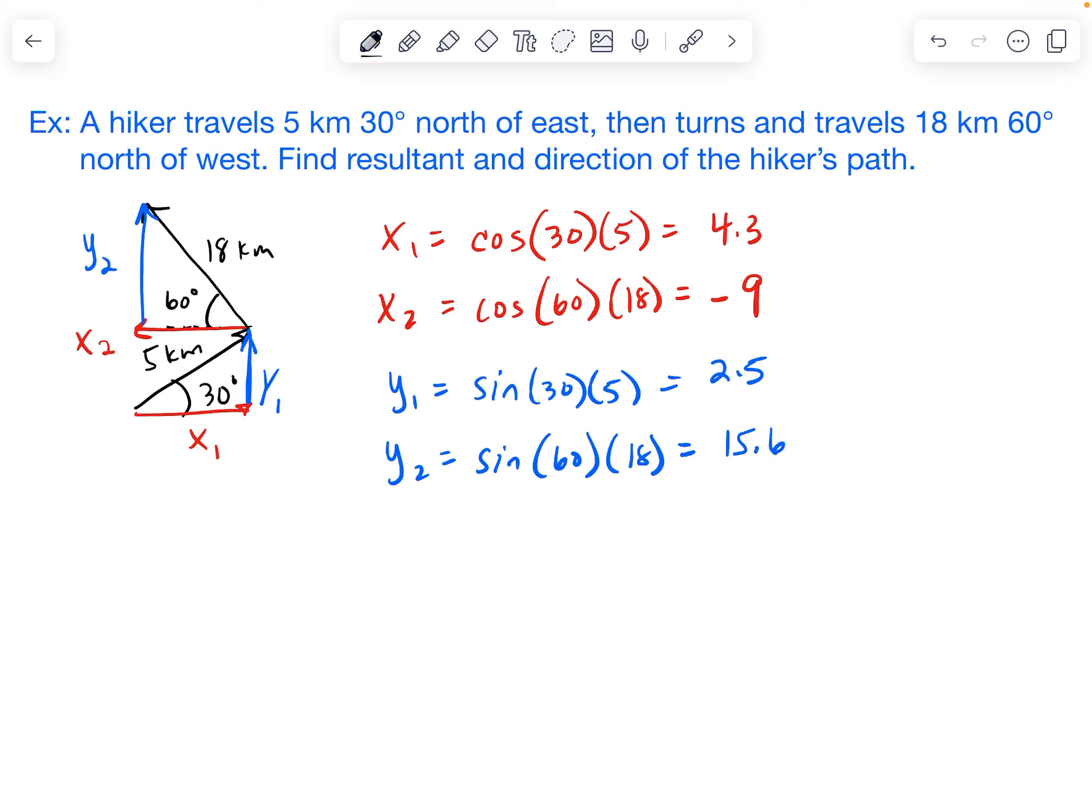Now that we have all of the x and y components solved for, now what we can find is we can find total x and total y. And that's just the culmination of all the x components and all of the y components. So for my x, I basically have 4.3 minus 9. So 4.3 minus 9 gives me negative 4.7.